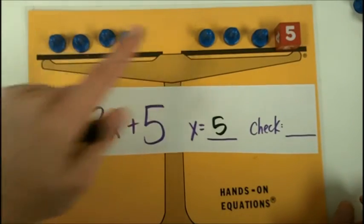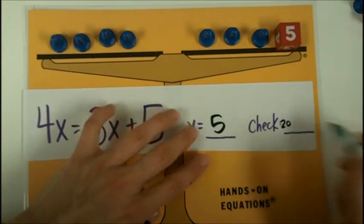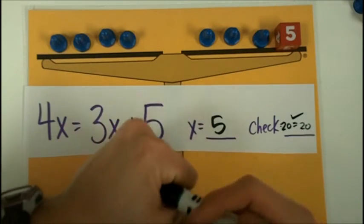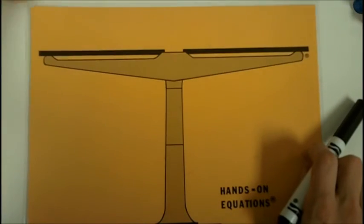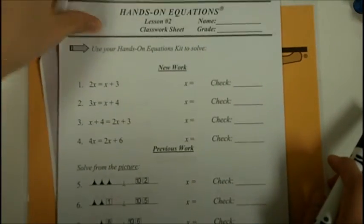And then I'm going to go back and see how much each side is worth. Five, ten, fifteen, twenty on this side. Five, ten, fifteen, twenty on that side. So twenty equals twenty with a check.